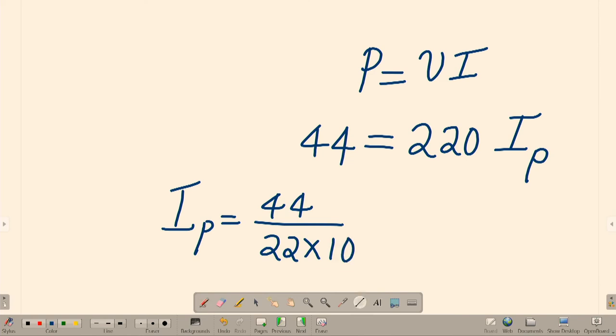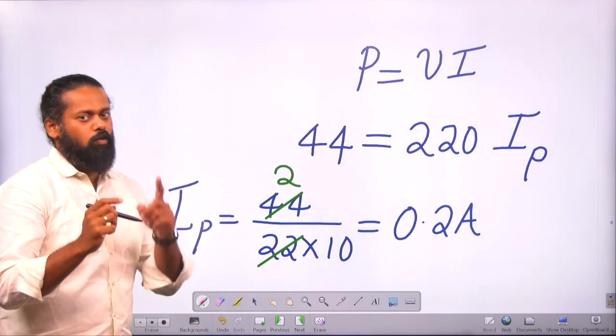How much is this? Here we can say if you are cancelling out this, you will get 2, right? 2 by 10. How much is this current? You can say the current is going to be 0.2 amps. So in the primary, current will be 0.2 amps.